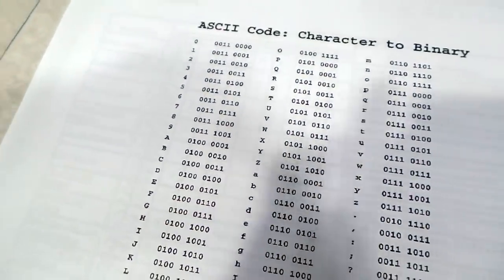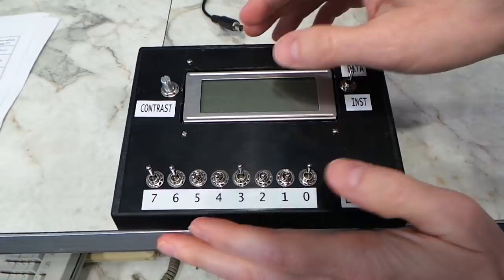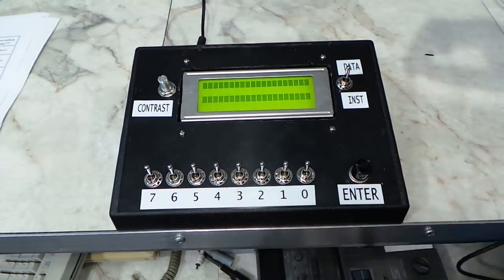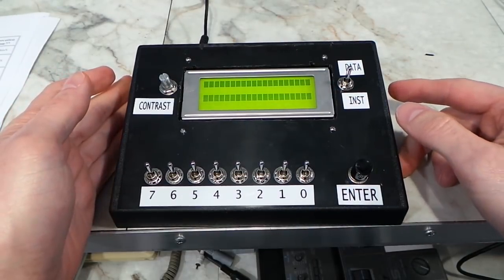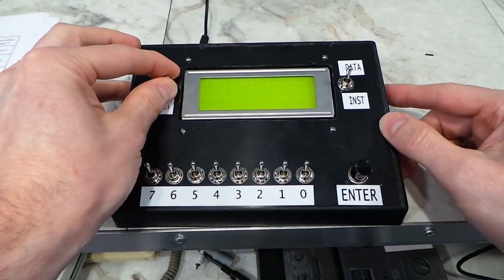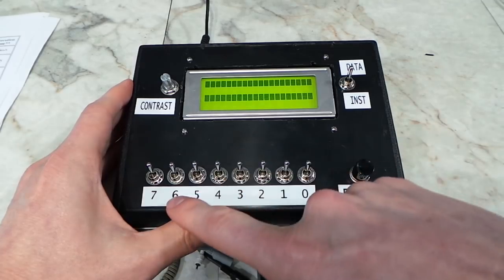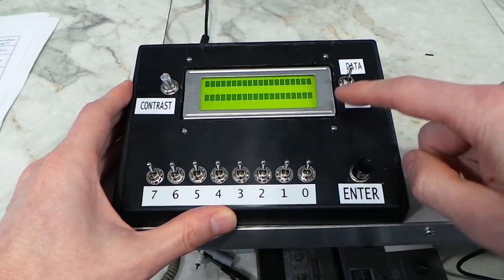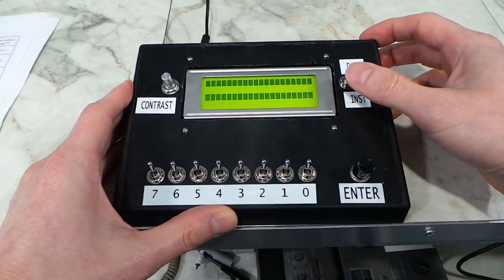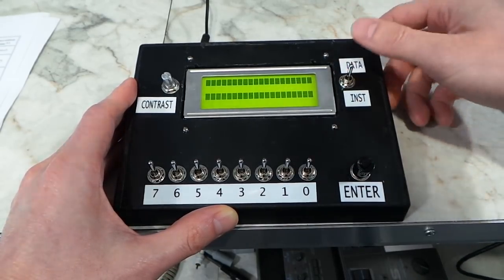I've got a chart printed out to show me the binary digits for ASCII characters, and a few sheets showing me all the instructions for the screen. But things didn't go exactly to plan. So here's the deal — this is actually a normal thing to see when you first fire up an LCD screen: just these two lines lit up. The contrast does work. However, I couldn't get anything else to work until eventually I realized all my buttons are upside down, all my switches are upside down — so I'm going to have to think about this for a moment.